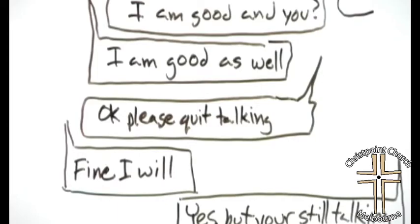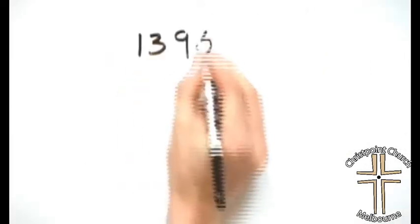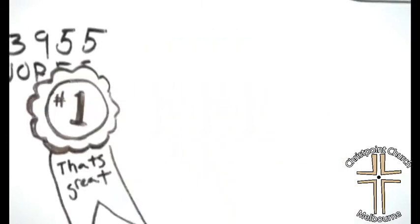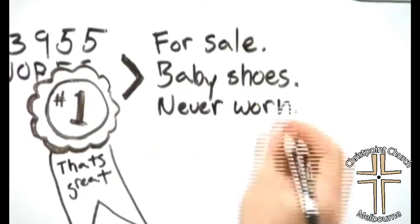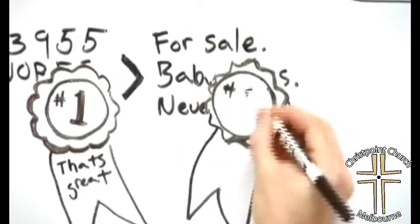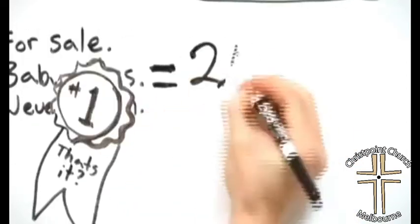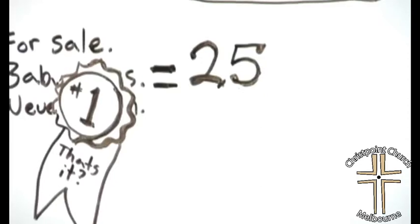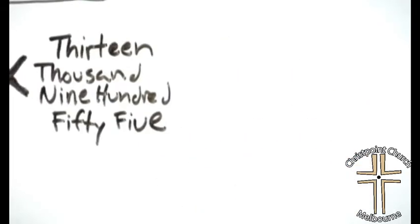The longest printed sentence in an English-language novel is 13,955 words, written by Jonathan Coe. The shortest story ever written is six words long, authored by Ernest Hemingway, with a total of 25 letters, which happens to be 11 letters less than it takes to write out 13,955.